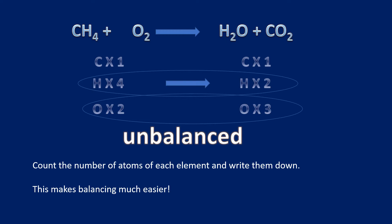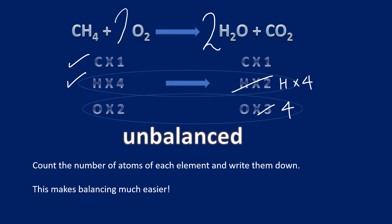The only way we can increase the number of hydrogens is to put a 2 in front of the water, giving us 2H2O. That now means we have four hydrogens, but be careful — it's also increased the number of oxygens to four on the right. The hydrogens are now balanced, and the carbons were already balanced, so I need two more oxygens on the left. Putting a 2 in front gives us four oxygens — that equation is now balanced.